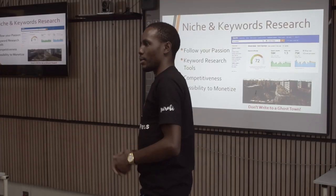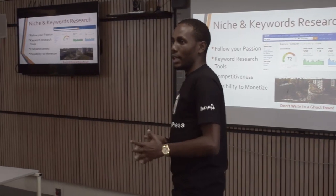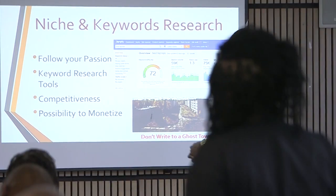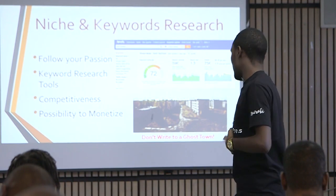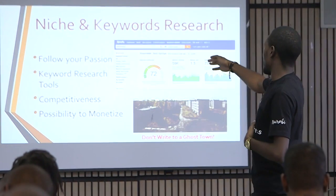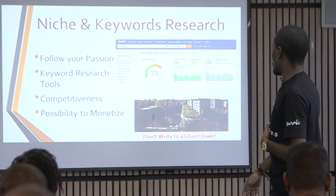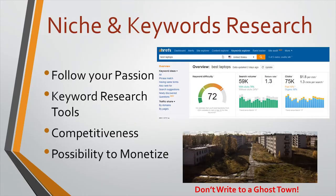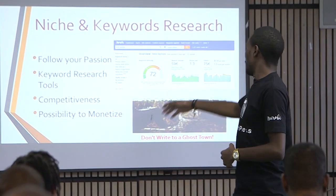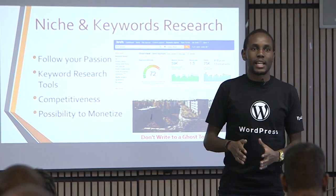You have to be sure what you are writing about is actually something people are searching for on search engines — and the biggest search engine is Google. To do keyword research, we use specific tools. For example, one of the most popular tools is shown in the top image. When you feed some words into this software, it tells you how many people are searching for that thing. For example, I put in the words 'best laptops' — that's what we call a buyer intent keyword.